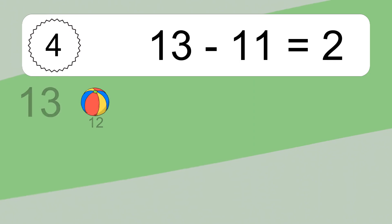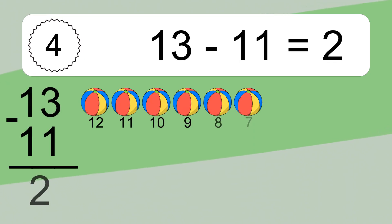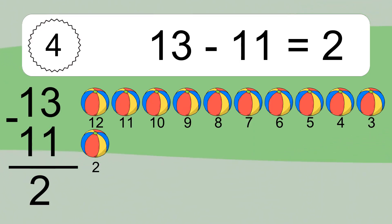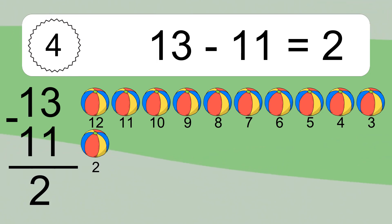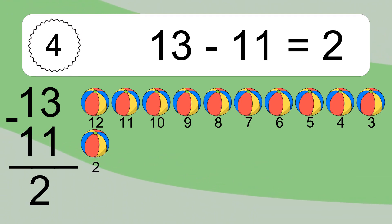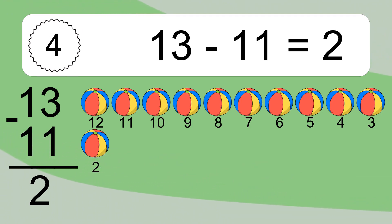13 minus 11 equals what? 13 minus 11 equals 2. Let's count it: 12, 11, 10, 9, 8, 7, 6, 5, 4, 3, 2.